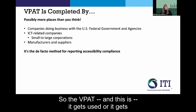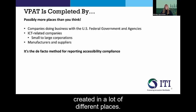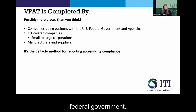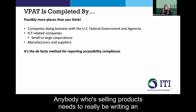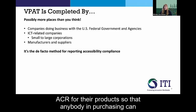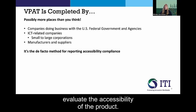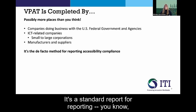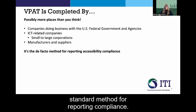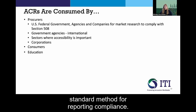The VPAT gets created in a lot of different places. People sometimes think, 'My company doesn't sell to the federal government, so I don't need to write these,' or 'We're too small a company.' That's not true. Anybody selling products really needs to be writing an ACR so that anyone in purchasing can evaluate the accessibility of the product. It applies to manufacturers, suppliers, small companies, and large companies — everybody needs to be doing accessibility conformance reports. It's the standard method for reporting compliance.